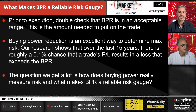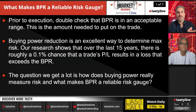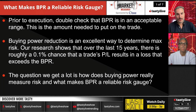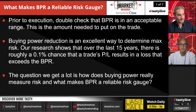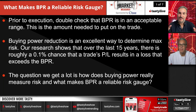Our research shows that over the last 15 years, there is a roughly 0.1% chance that a trade's P&L results in a loss that exceeds the buying power. We're looking at SPY strangles here — the overall S&P 500 market — and when you put those trades on, your buying power is roughly your max pain.